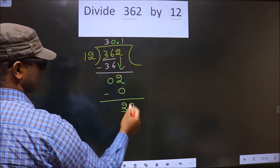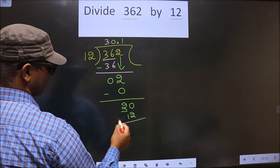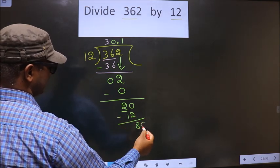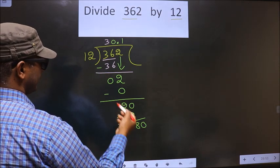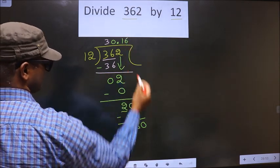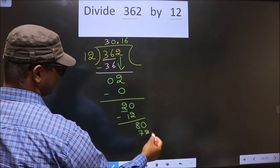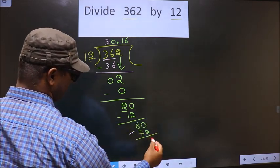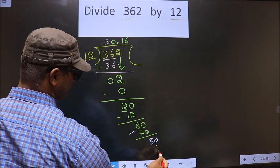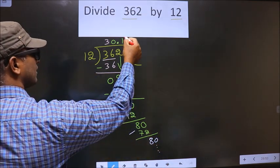You subtract, you get 8. Now we can take 0. Now a number close to 80 in the 12 table is 12 times 6, which is 72. You subtract, you get 80. It goes on, we get 6 bar on 6.